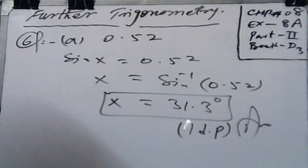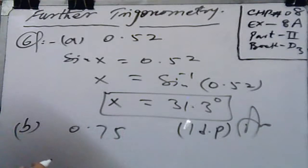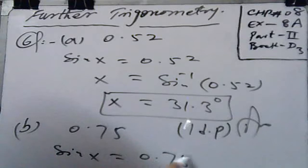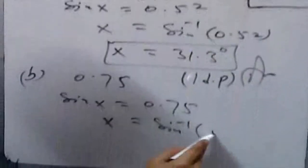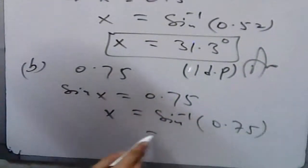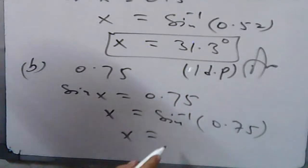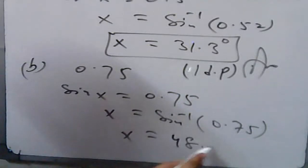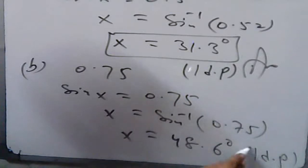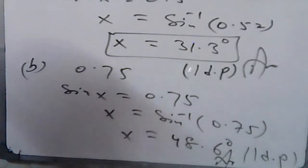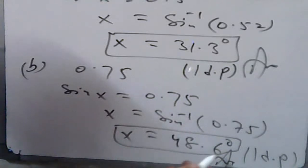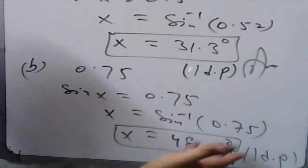In part b, we have been given 0.75. So sin x is equal to 0.75. The value of x is sin inverse 0.75, which gives x = 48.6 degrees, up to 1 decimal place. That is your required result, which is also an acute angle less than 90. So no need to subtract from 180 for an obtuse angle.